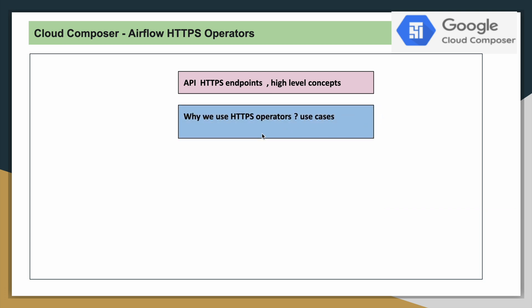Now, why do we use these operators — that is HTTP Airflow operators? You know how Airflow works: using different operators it will try to execute the tasks defined within the DAG. In order to interact with HTTP endpoints, Airflow provides these HTTP operators, and using these operators we will be able to interact with the HTTP endpoints.